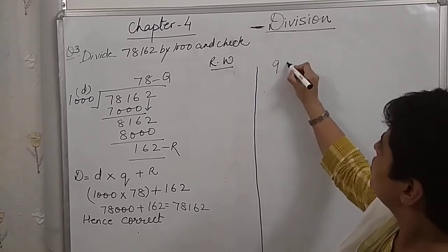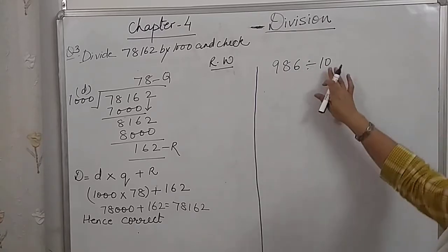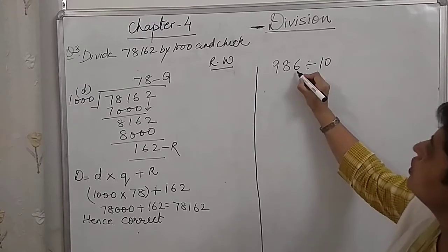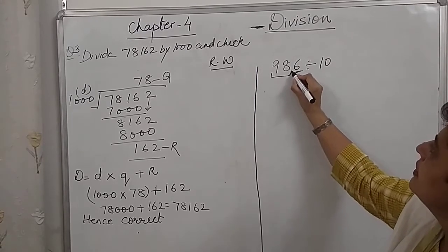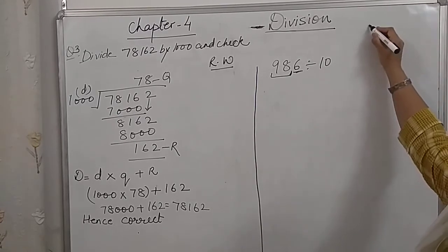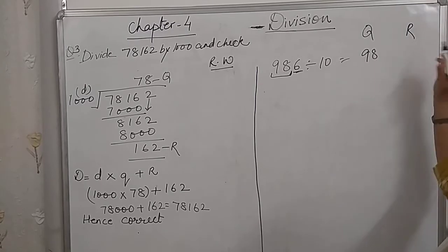Let's assume any question 986 divided by 10. How many 0's are there in the divisor? 1 zero. So, the last number will be the remainder and the remaining digits will become the quotient. So, 98 is the quotient and remainder is 6.